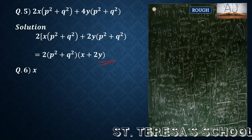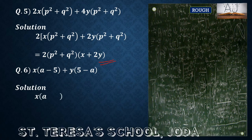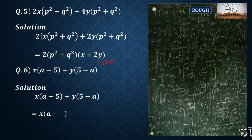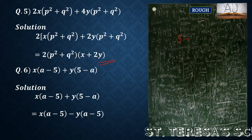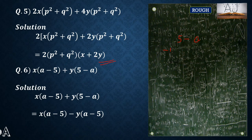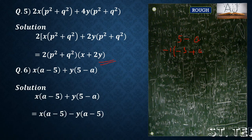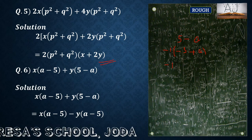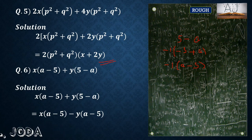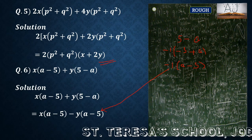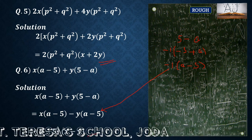Question number 6: x(a minus 5) plus y(5 minus a). We will change the second expression by taking minus common. If you take minus common from (5 minus a), we get minus(a minus 5). So now from both terms we have (a minus 5) common. We have taken minus y common so it becomes (a minus 5). What is left is x minus y. So the factors are (a minus 5) and (x minus y).